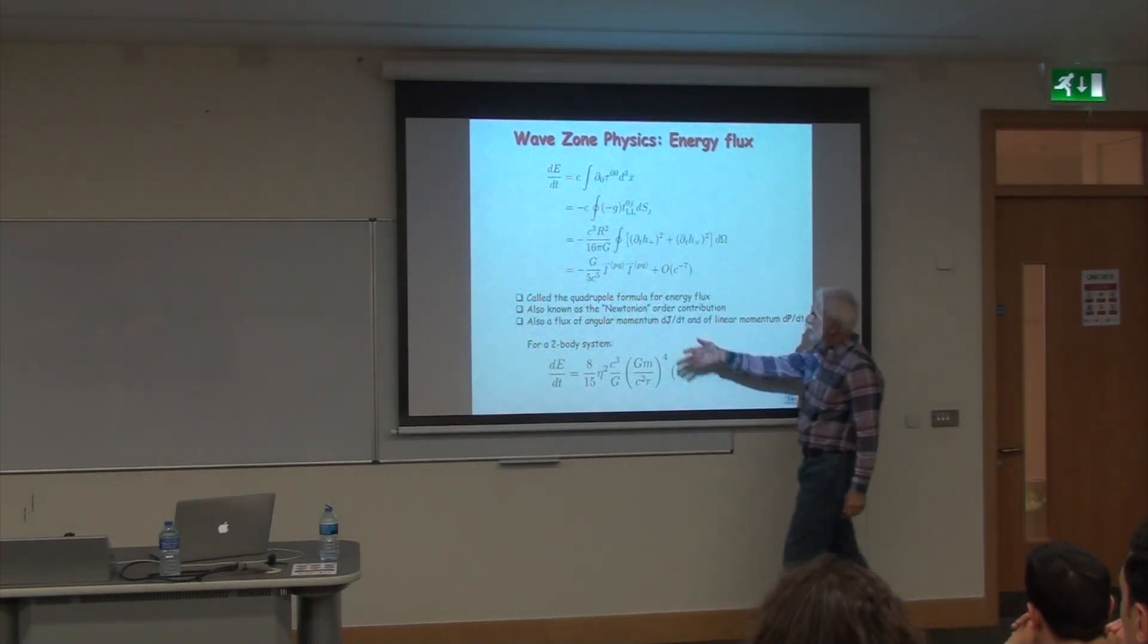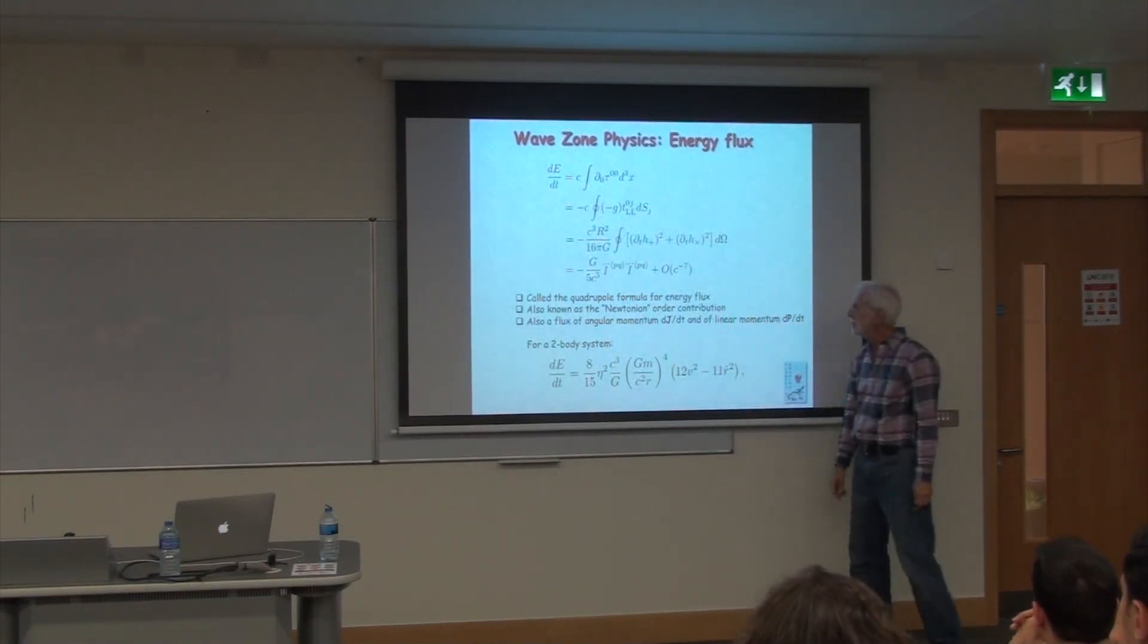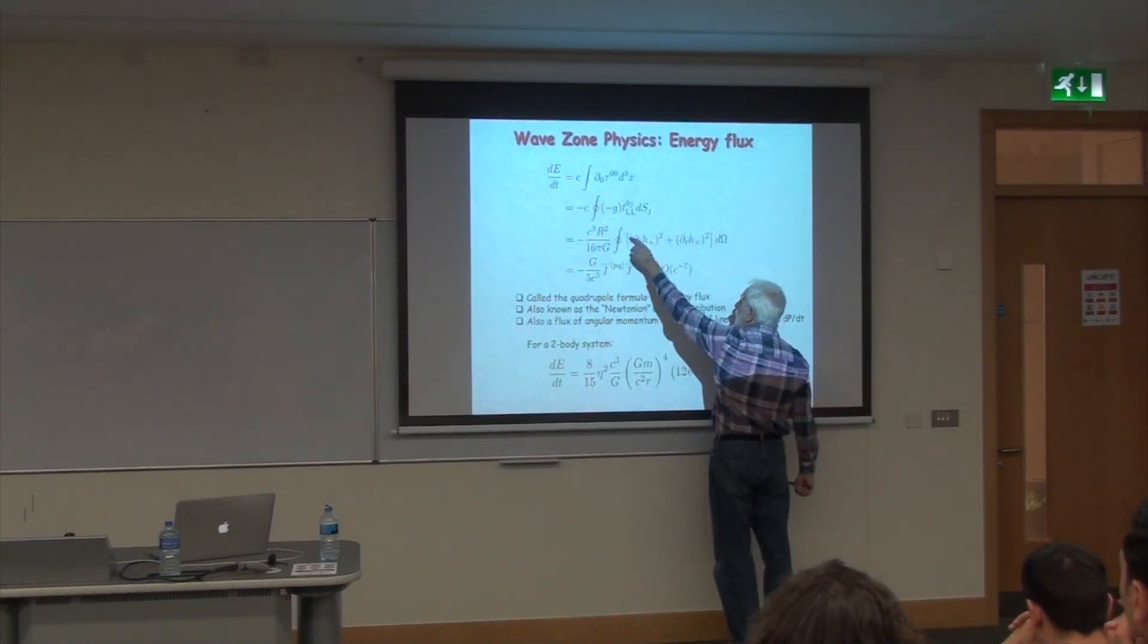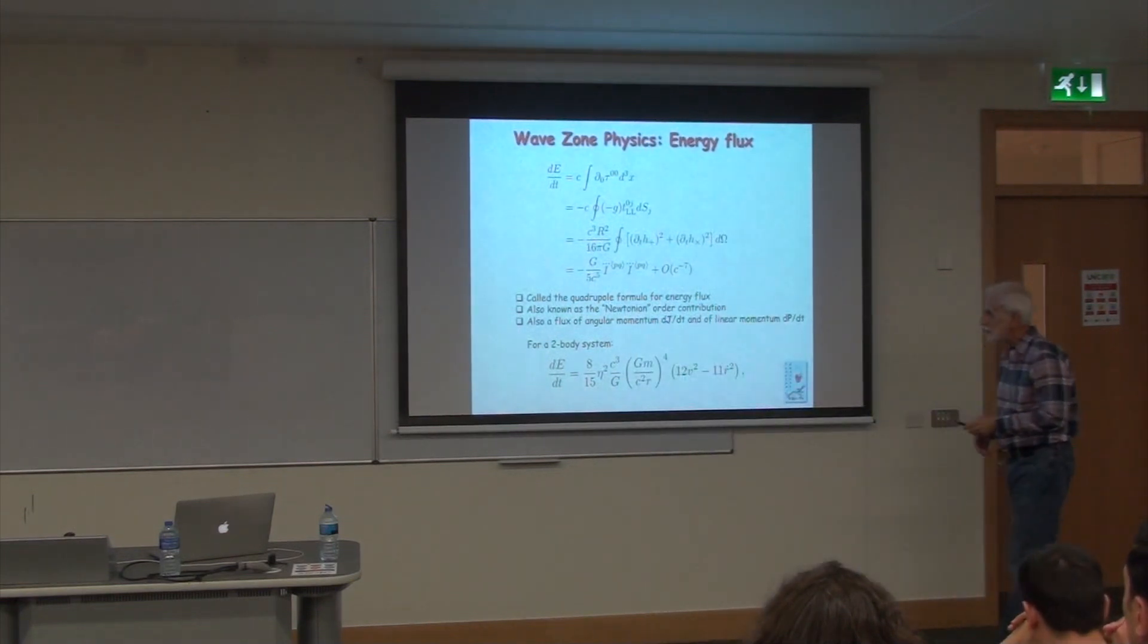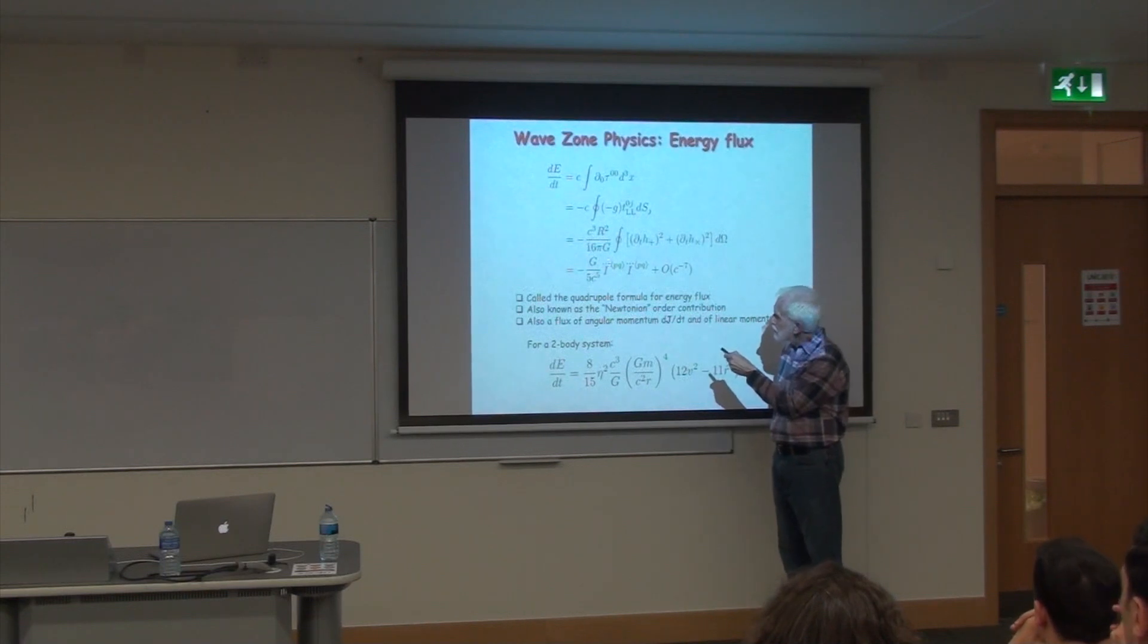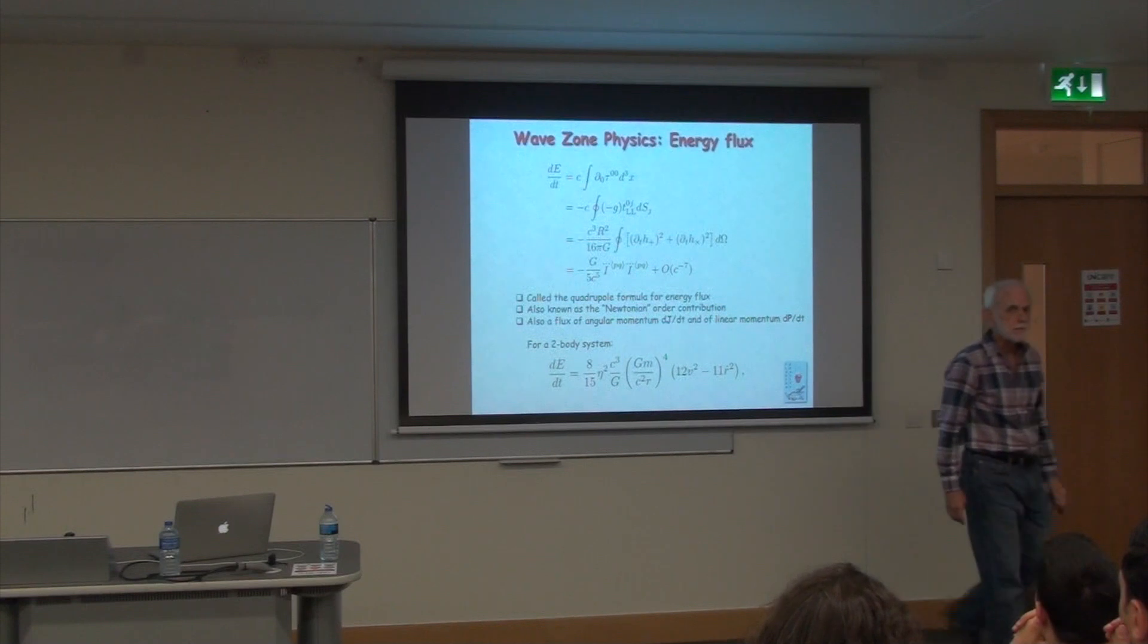If you integrate over a surface at infinity, and since this goes as 1 over r, this surface element goes as r squared, you just need the 1 over r squared part of tau zero j. Since it's quadratic in the fields, you just need the 1 over r parts of those fields. You plug everything in, grind and grind, and you discover that the answer is r squared times solid angle integral, and the first time derivative of h plus squared plus the first time derivative of h cross squared. So you can express the answer that way.